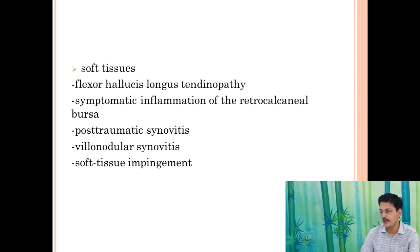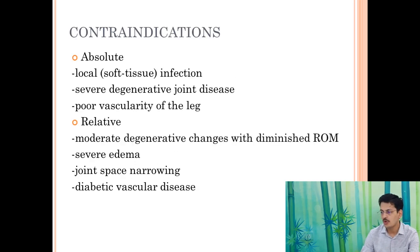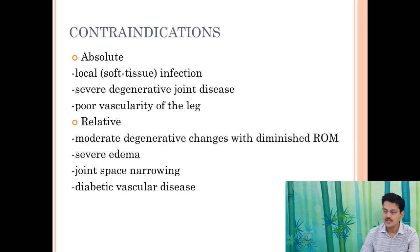Soft tissues that can be addressed include Achilles tendinopathies, symptomatic inflammation of the retrocalcaneal bursa, post-traumatic synovitis, PVNS, and soft tissue impingement. Posterior ankle impingement can be purely soft tissue in nature without a bony component. Contraindications include acute infection, severe degenerative disease, poor vascularity of the leg, diabetic vascular disease, RSD patients, and cases with very severe joint space narrowing.